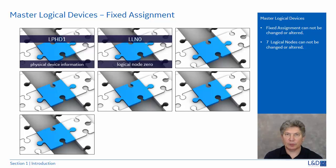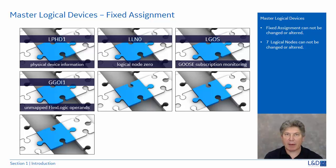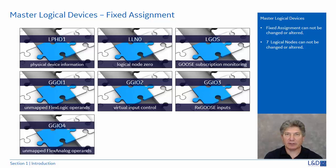Next is LLN0, logical node 0, which provides the status of the settings groups, the GOOSE and report control blocks, and datasets, indicating the status of the relay — whether it's on, off, or in test mode. LGOS is used for GOOSE subscription monitoring, such as RxGOOSE status and data associated with the subscription GOOSE configuration. GGIO1 is used for unmapped flex logic operands such as Contact I/O, and brick items such as field I/O and field transducer. GGIO2 is used for virtual input control. GGIO3 is used for monitoring subscription GOOSE inputs — both analog and digital signals. Finally, GGIO4 is used for unmapped flex analog operands: analog values that have not been mapped to a logical node.